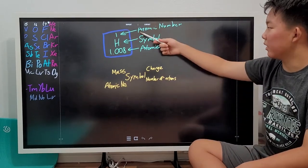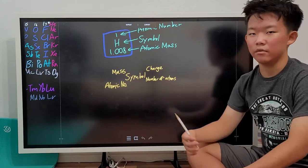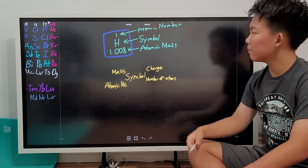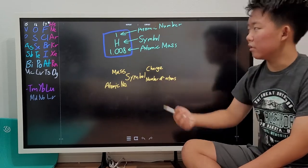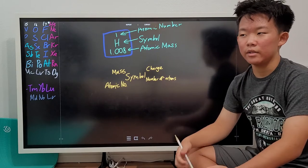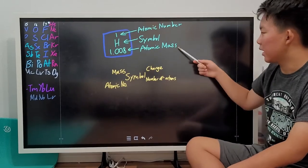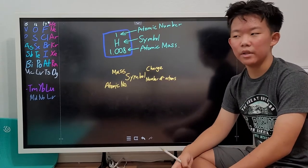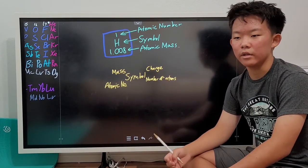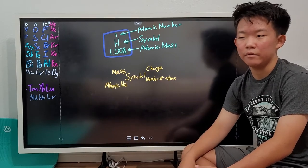The atomic number of the element, which is the amount of protons the element has, or in other words, the identity of the element. The symbol, which derives from the Greek, Latin or English name, and it's what symbolizes the element. And lastly, the atomic mass. This is just how many grams a mole of the element would have, or in other words, how many atomic mass units an atom of the element would weigh.